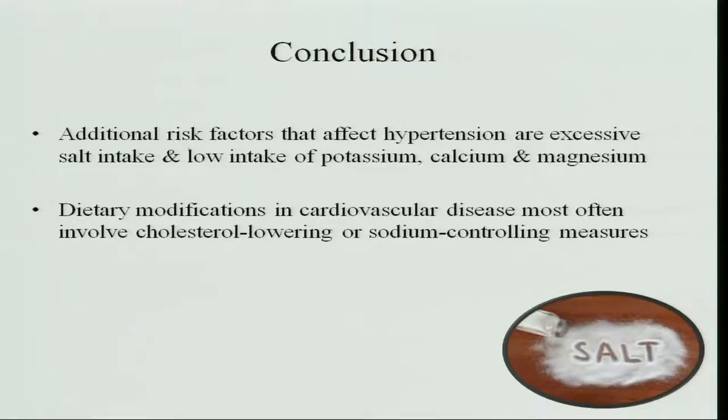To conclude: additional risk factors that affect hypertension are excessive salt intake and low intake of potassium, calcium and magnesium. In our diet we should include less sodium and more potassium, calcium and magnesium so that our heart works properly, pumps blood efficiently, arteries are not injured, and the entire body gets proper blood circulation — because blood is the carrier of all nutrients and oxygen and keeps us fit.